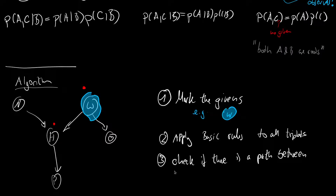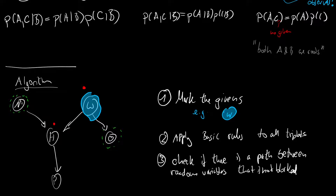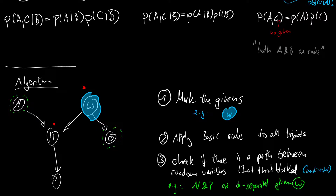Step three: check if there is a path between random variables that is not blocked. We could ask about the relation between N and O — we see there is a block, so there is no unblocked path. Note that for this we ignore the arrows, so this is an undirected path search. For example, N and P are d-separated given W — but also if nothing was given, because H would serve as the blocking node.